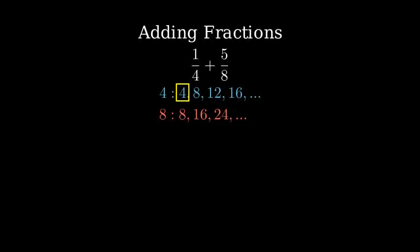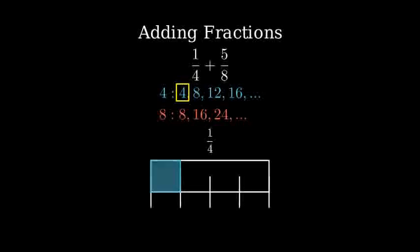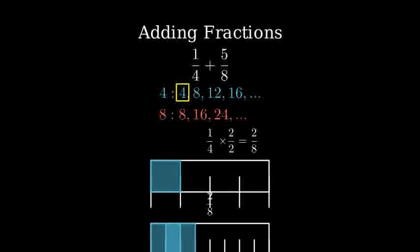To add these fractions, we need to convert one-fourth to an equivalent fraction with denominator eight. Let's visualize this with rectangles. Here's one-fourth, and when we multiply both top and bottom by two, we get two-eighths, which is equivalent to one-fourth.